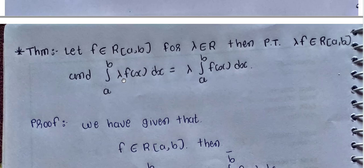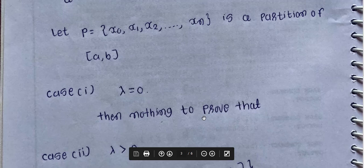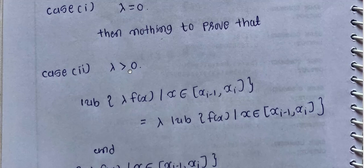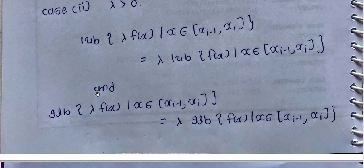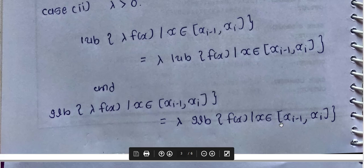Case 1: If λ equals 0, then there is nothing to prove. Case 2: If λ is greater than 0. Then the lub of λf(x) where x belongs to closed interval [xᵢ₋₁, xᵢ] equals λ times the lub of f(x) over that interval. Similarly, the glb of λf(x) equals λ times the glb of f(x) over [xᵢ₋₁, xᵢ]. So U(P, λf) equals λ times U(P, f) and L(P, λf) equals λ times L(P, f).